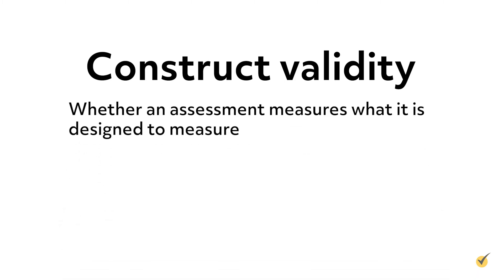Care should also be given when writing assessment questions to ensure that they measure what they're designed to measure without assessing something else, even inadvertently. This is known as construct validity. For example, a math problem designed to assess a third grader's ability to find the perimeter of a rectangle should not be written at an eighth grade reading level, potentially causing the student to miss the problem due to difficulties with comprehending the question rather than an inability to find the perimeter.